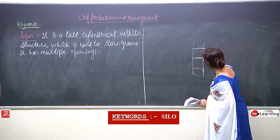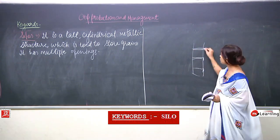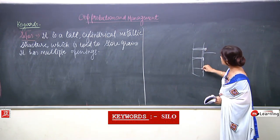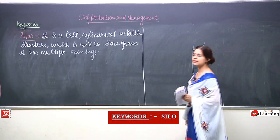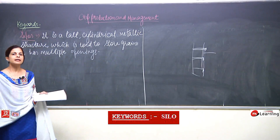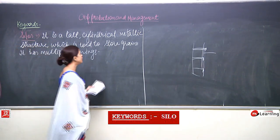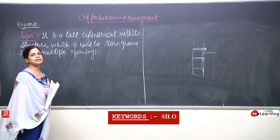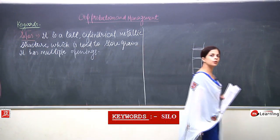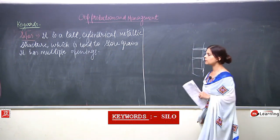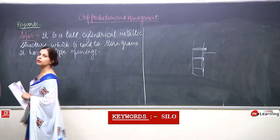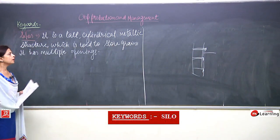For example, if a silo has three openings, only the required quantity can be removed from one opening at a time, so that the whole amount of grain does not come in contact with moisture. Silos also protect grains from rodents, insects, temperature, and moisture. The temperature of the godown also matters.